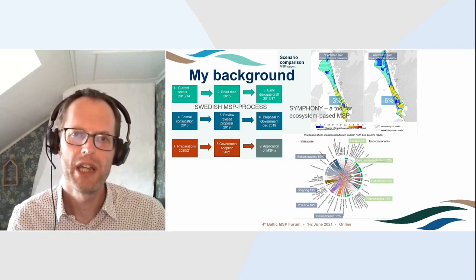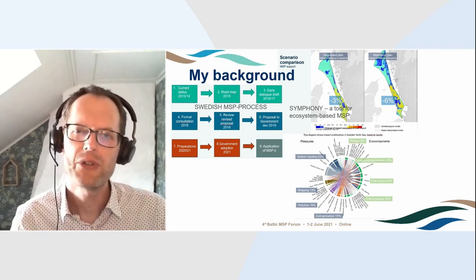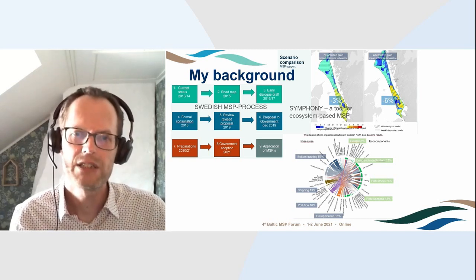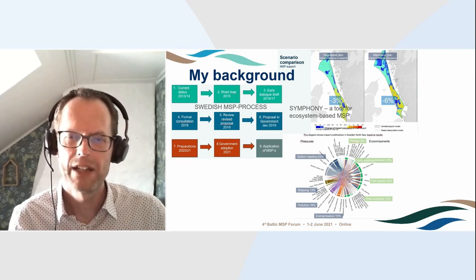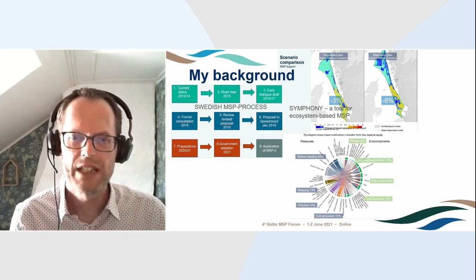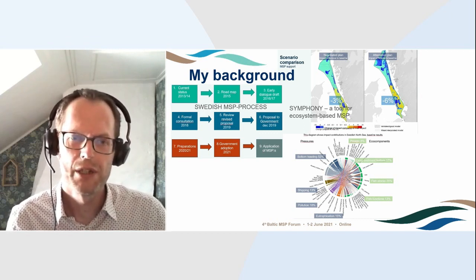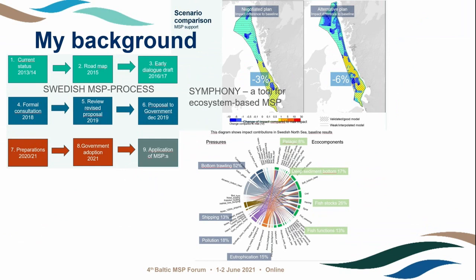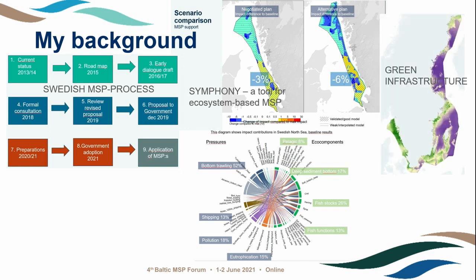This picture shows how we have compared different planning scenarios to evaluate environmental impacts at the MSP planning level. Symfony can be used to produce chord diagrams, which you see below, where you have the different pressures from sectors affecting a number of different ecosystem components. We have also used Symfony to develop green infrastructure maps, and in Swedish MSP we have actually included designated areas — so-called small-N areas for nature — in the plans, as an addition to the established marine protected areas.